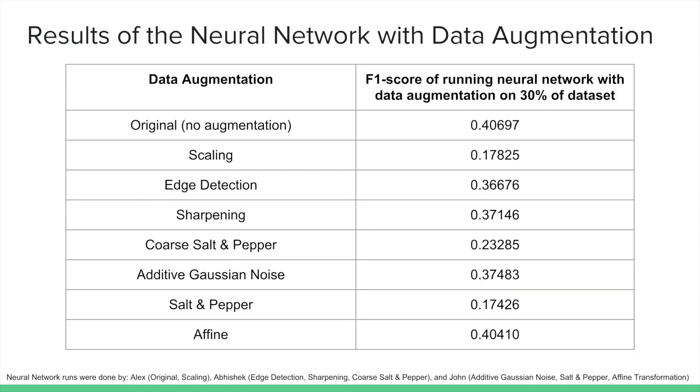Running the neural network with 30% data augmentation gave some unexpected results. The original dataset had an F1 score of 0.407, where the F1 score is a more accurate reflection of a neural network's accuracy in multi-label classification problems.